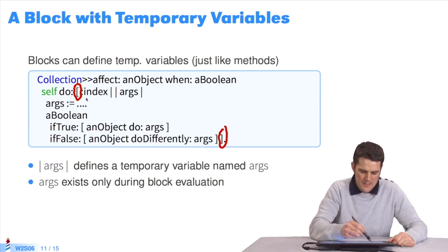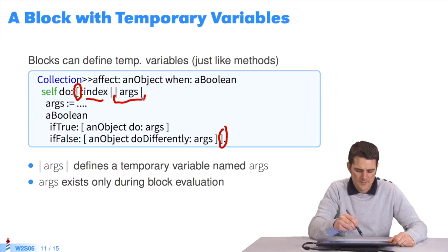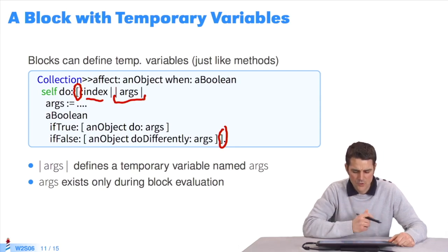It takes one argument called index. It takes one temporary variable defined here between two pipes. It's called args. This temporary variable, args, exists only during the evaluation of the expressions in the block.